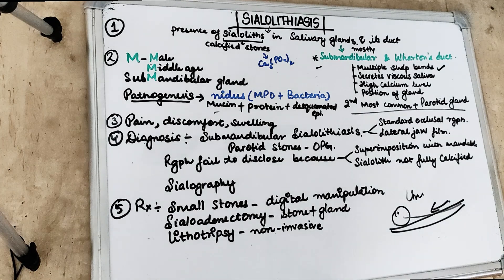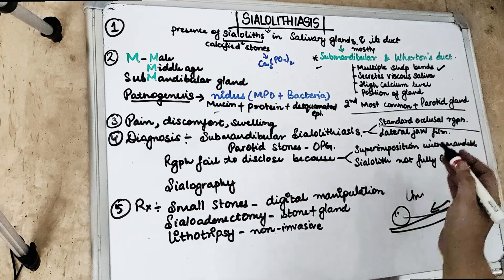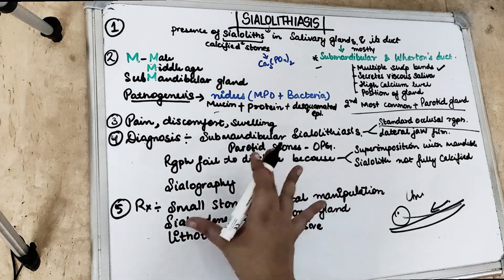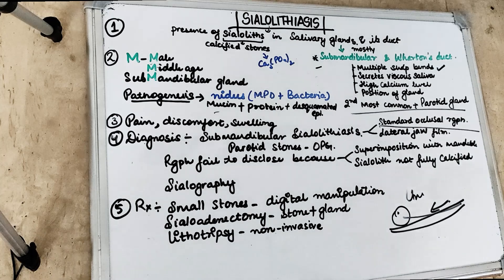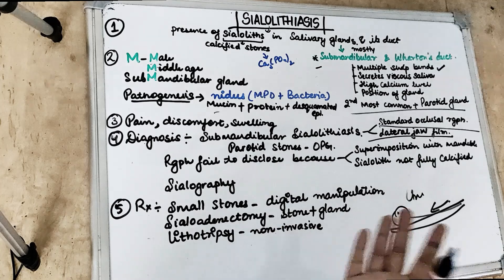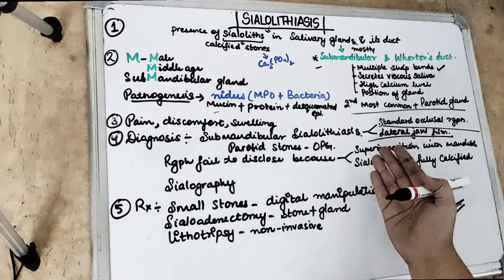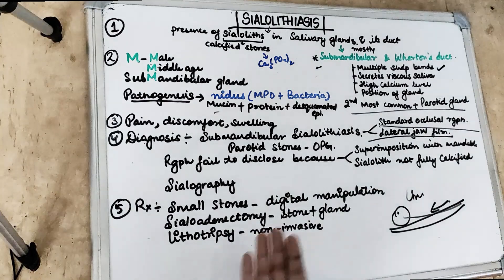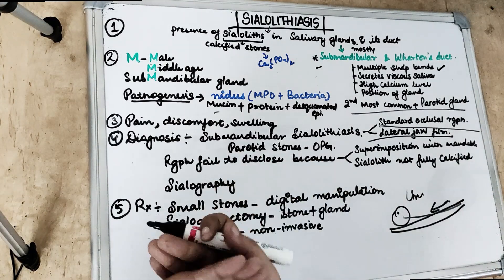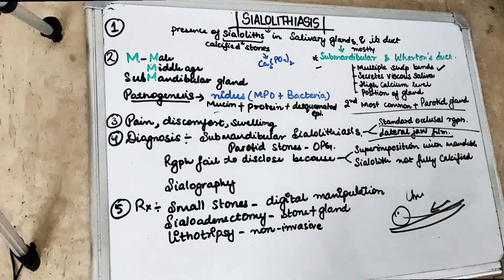How do we diagnose it? For submandibular sialoliths, we can use a standard occlusal radiograph, which will disclose calcifications present at the floor of the mouth. The exact location can be determined via lateral jaw films. To detect parotid stones, we can use an OPG. However, radiographs sometimes fail to disclose sialoliths — either due to superimposition of the stone with the mandible, or because the sialolith is not completely calcified.